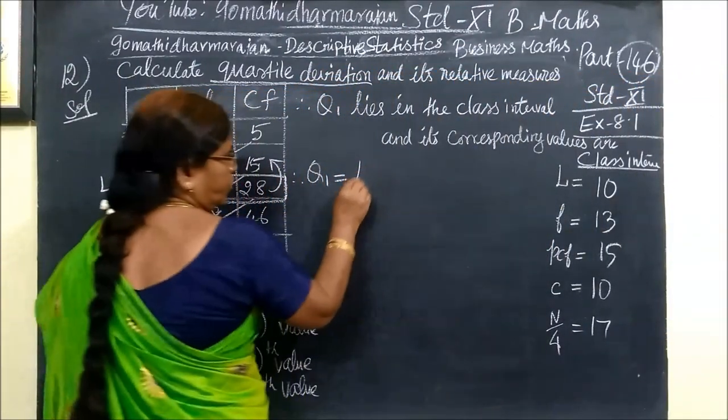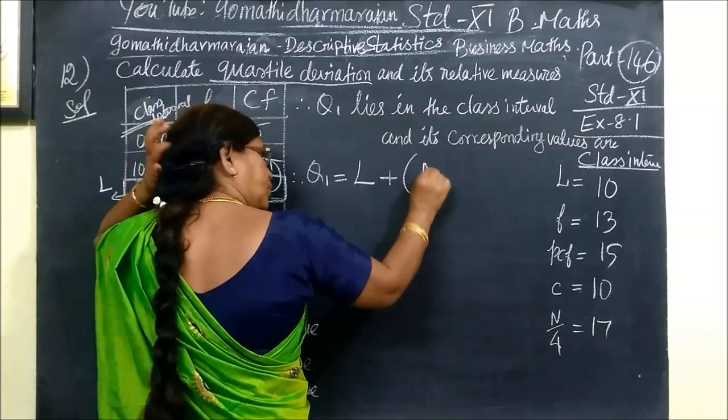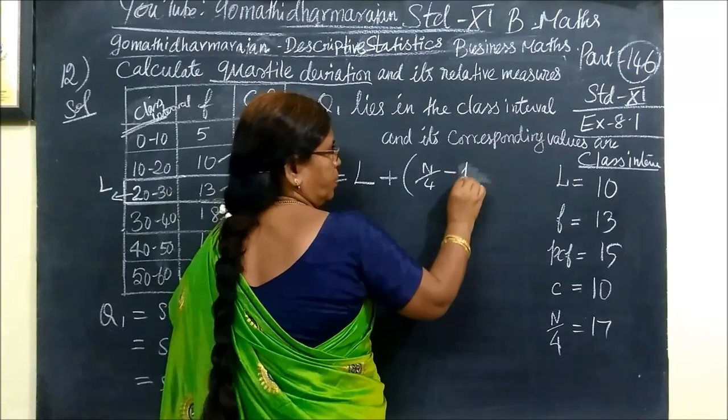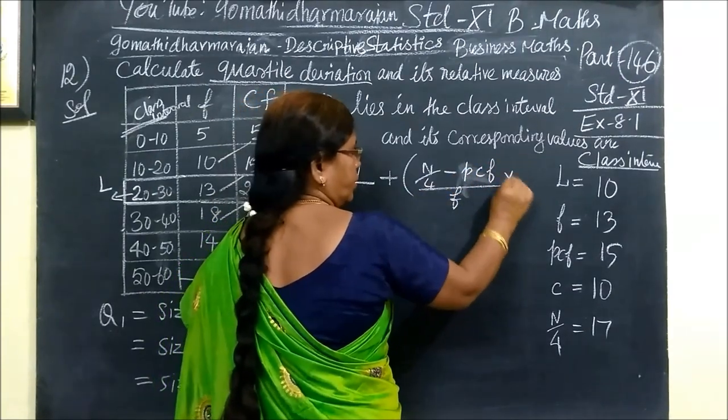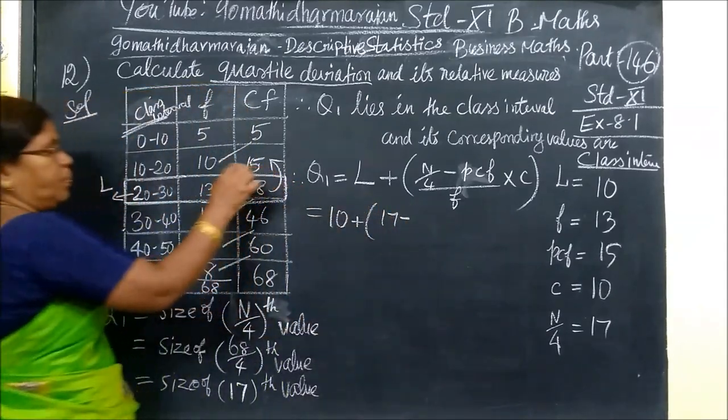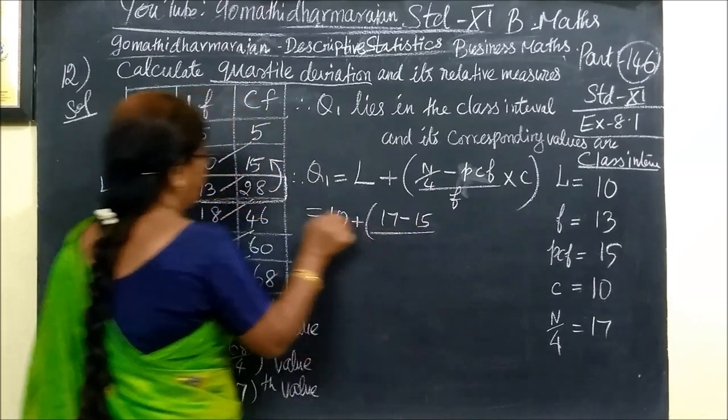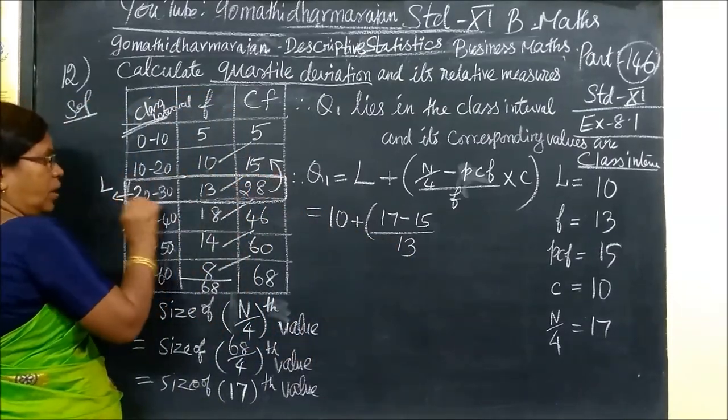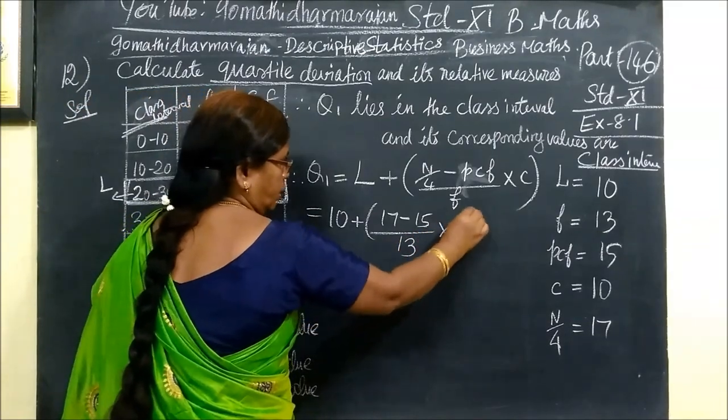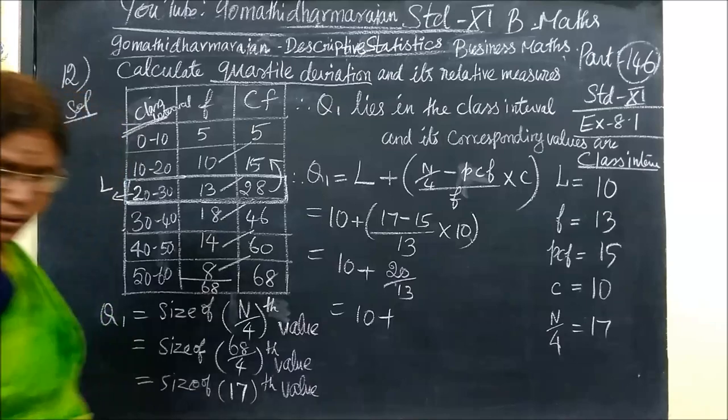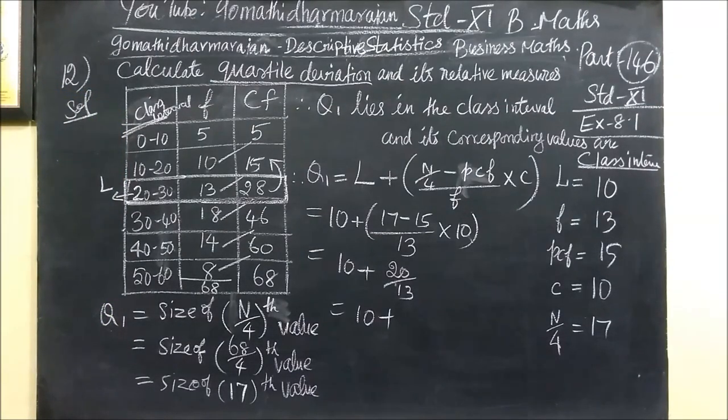Now applying the formula: L plus bracket n by 4 minus previous cumulative frequency, divided by f, times C. So it's 10 plus (17 minus 15) divided by 13, times 10. This equals 10 plus 20 by 13, which gives us 21.54.